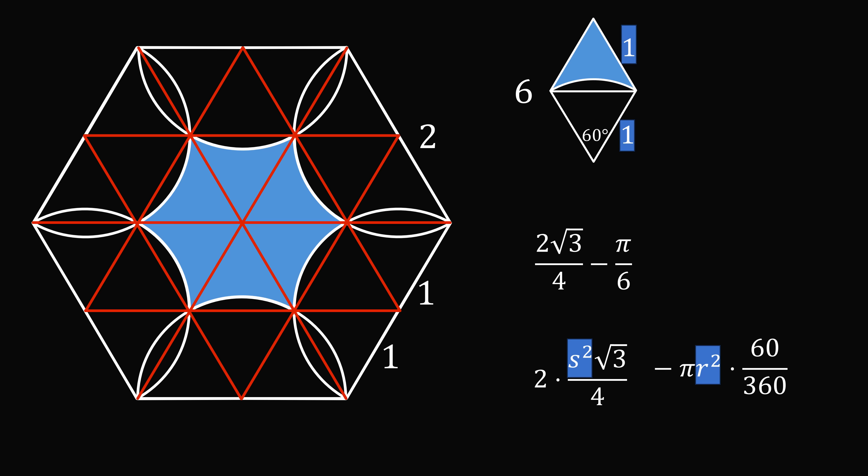So, we substitute this in to get 2 root 3 over 4 minus pi over 6. Let's now simplify this to a fraction with the denominator of 6, and this is equal to 3 root 3 minus pi all over 6.